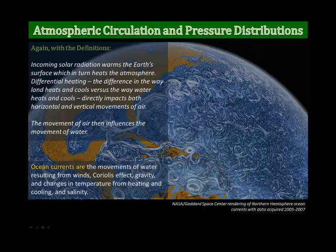Again with the definitions. Incoming solar radiation warms the Earth's surface, which in turn heats the atmosphere. Differential heating is the difference in the way land heats and cools versus the way water heats and cools. As we learned in earlier videos, land heats up faster and cools off faster than water. Water takes a longer time to warm up — in fact, it's one of the substances that takes the longest to warm up — and it also cools off slower.